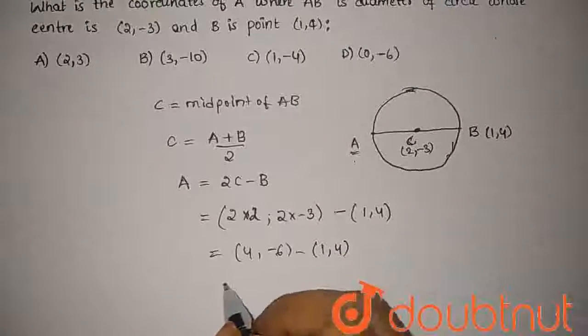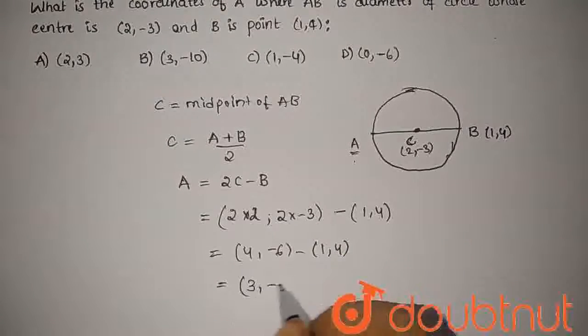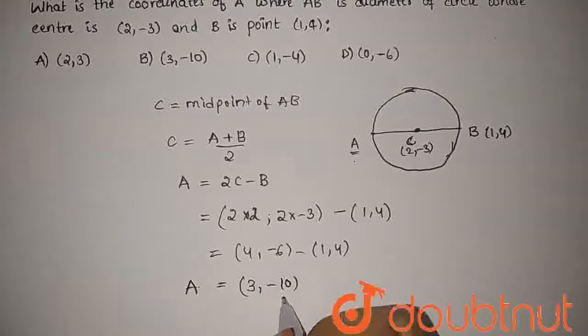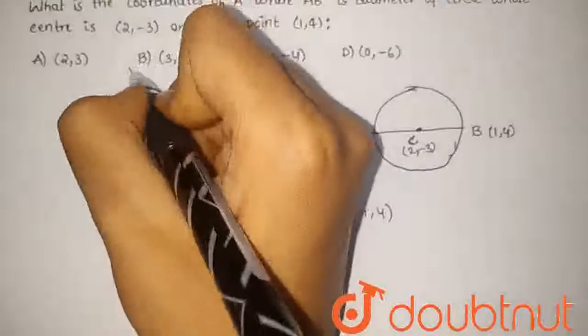And from here, what would this be? It would be 3 minus 10. This is the coordinates of A. So, the answer is 3 minus 10, option B.